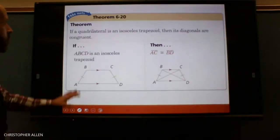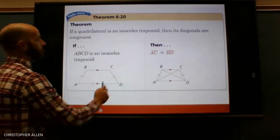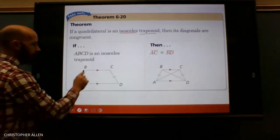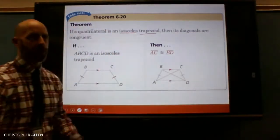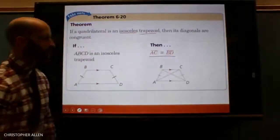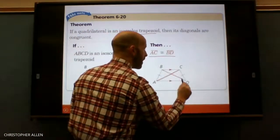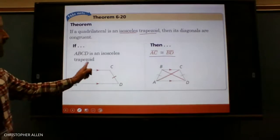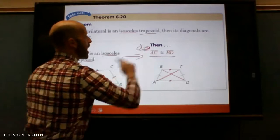Theorem 6-20. This one is also about a trapezoid — specifically an isosceles trapezoid. If we have an isosceles trapezoid, then its diagonals are congruent. I think this is pretty intuitive. If you just look at the picture, doesn't it look like that length and that length should be the same? So if it's an isosceles trapezoid, the diagonals have to be congruent.